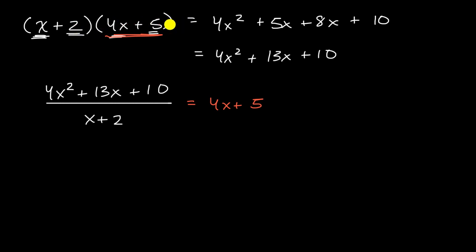Even if you didn't have this information, there are ways to approach this. One way is to factor the numerator. You could factor this by grouping. Let me do that here: 4x² + 13x + 10.